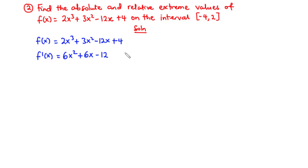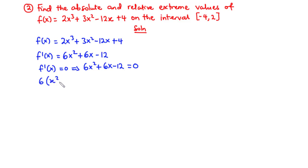We equate f'(x) to 0: 6x² + 6x - 12 = 0. We can factor out 6, giving x² + x - 2 = 0. The coefficient of x² is 1 and the constant is -2. We want two values that multiply to -2 and add to 1: those are -1 and 2. So we expand as x² - x + 2x - 2 = 0.